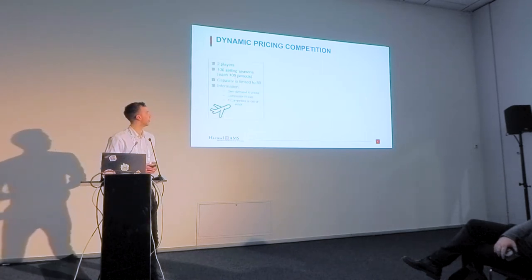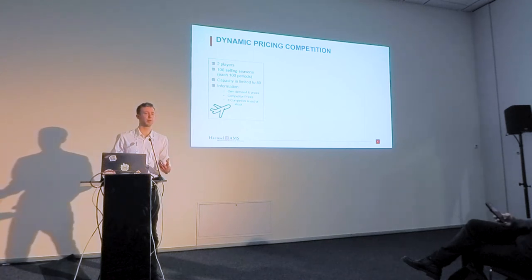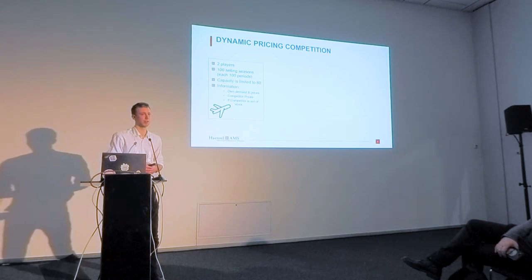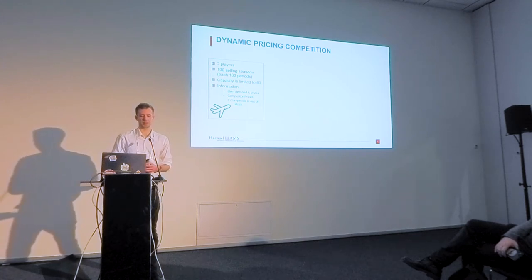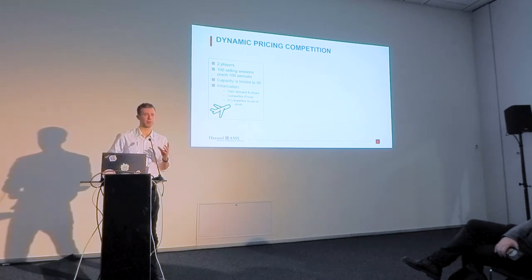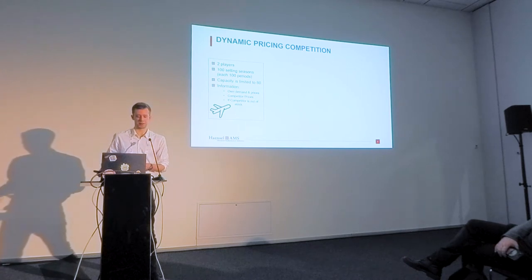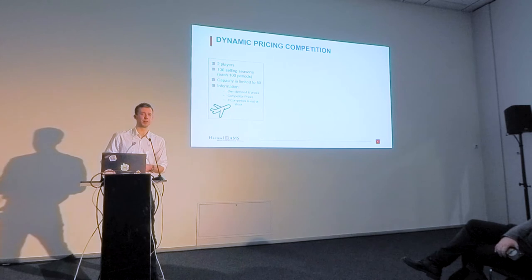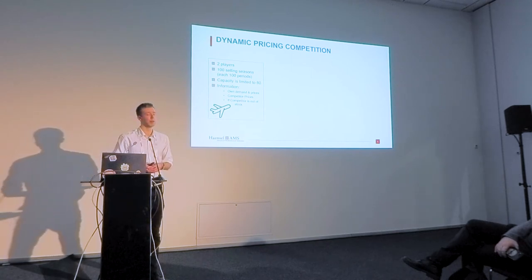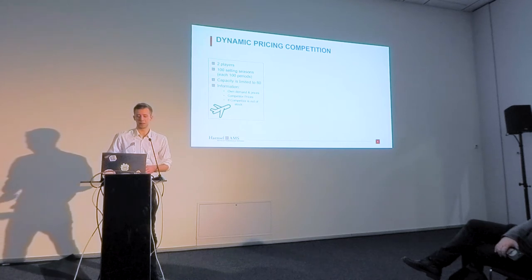So what did we do? We have three scenarios, and we allow participants to compete in one, or all of them, depending on what they want to focus on. The first scenario is a duopoly, based on the airline industry, where we have two players and each player sells one product: seats on a plane, with capacity limited to 80. We divide the whole simulation into 100 selling seasons, each consisting of 100 periods. We give each player information about their own demand and prices as well as the prices of their competitor, and also whether the competitor still has capacity left — they don't know exactly how much the competitor sold, but they do know if their competitor still has seats left on the plane.